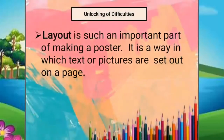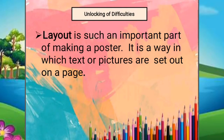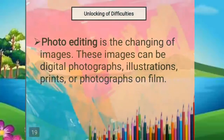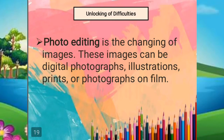Let us now start our lesson with unlocking of difficulties. Number one is layout — layout is such an important part of making a poster; it is a way in which text or pictures are set out on a page. Number two is photo editing — photo editing is the changing of images. These images can be digital photographs, illustrations, prints, or photographs on film.